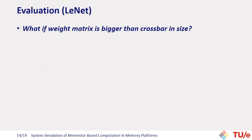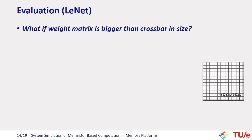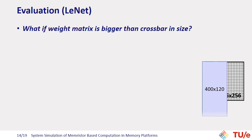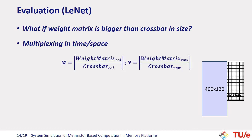But what if the weight matrix is bigger than the crossbar? For example, if we want to map the 400×120 weight matrix of the first fully connected layer of AlexNet to a 256×256 memristor crossbar, it would not fit. In that case, the solution is to use these formulas and multiply tasks either in time or in space.